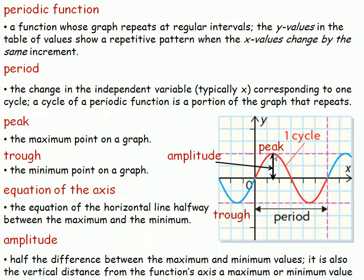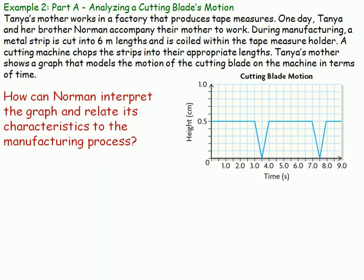The peak is a high point or a local maximum point in the graph. A trough are the minimum points. The equation of the axis is the equation of the horizontal line halfway between the maximum and minimum points. On this graph, the equation of the axis is the x-axis. The amplitude is half the distance between a maximum point and a minimum point. Or it's the distance from the equation of the axis to a peak, or the equation of the axis to a trough.